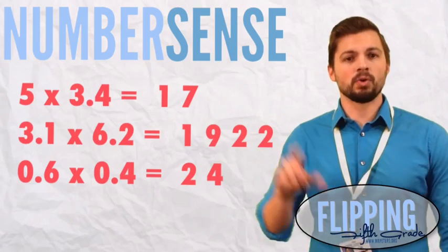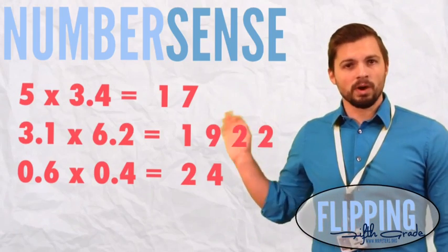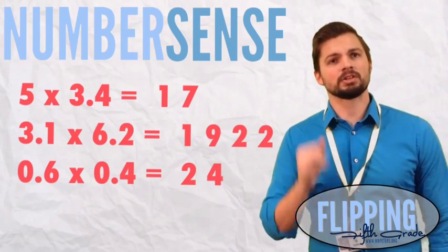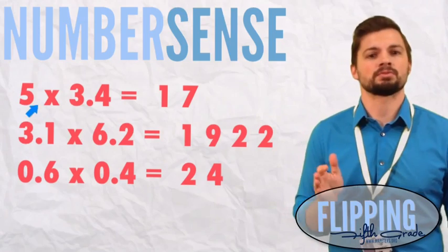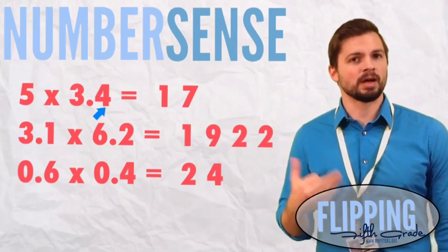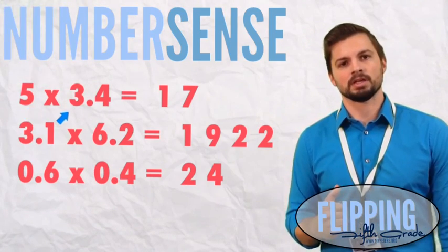We're going to talk about where we should put the decimals. Let's look at the first example. 5 times 3 and 4 tenths. Well, we think about this. 5 times 3 is 15.